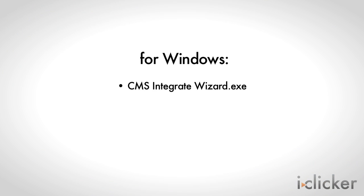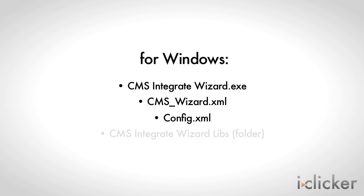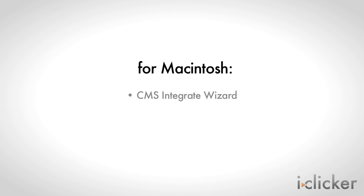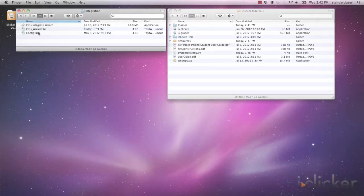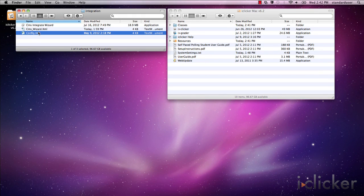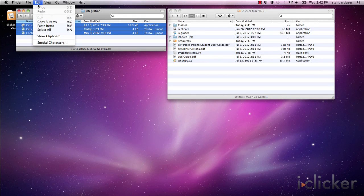For Windows: cms-integrate-wizard.exe, cms-wizard.xml, config.xml, and the folder cms-integrate-wizard-libs. For Macintosh: cms-integrate-wizard, cms-wizard.xml, and config.xml. You'll need to copy these files into the resources subfolder of your iClicker Win or iClicker Mac folder.